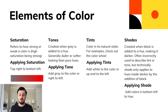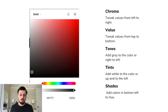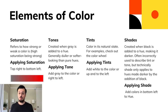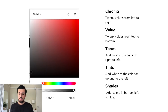Tones are created when gray is added to a hue, making it duller or softer than pure hues. To apply tone, you move from left to right on the scale — you can see the gray is on the left side. For tints, you're just adding white to the color, moving up and to the left. White would be at the very top left (FFF), and if you want to keep the red, you'd move a little to the right. Shades are created when black is added to a hue, making it darker — basically the opposite of tint. You'd add colors from the bottom left to the hue.